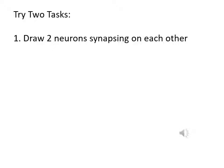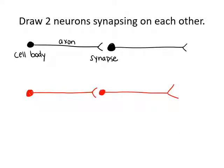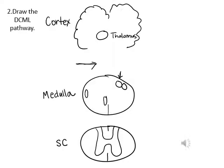Drawing is a good method to help you remember neural pathways. Let's do two activities. First, draw two neurons synapsing on each other — the answer will be on the next slide. Second, using the spinal cord cross-section, the medulla cross-section, and the coronal section of the cerebral cortex, try to draw the DCML pathway. The answer is on the next slide.